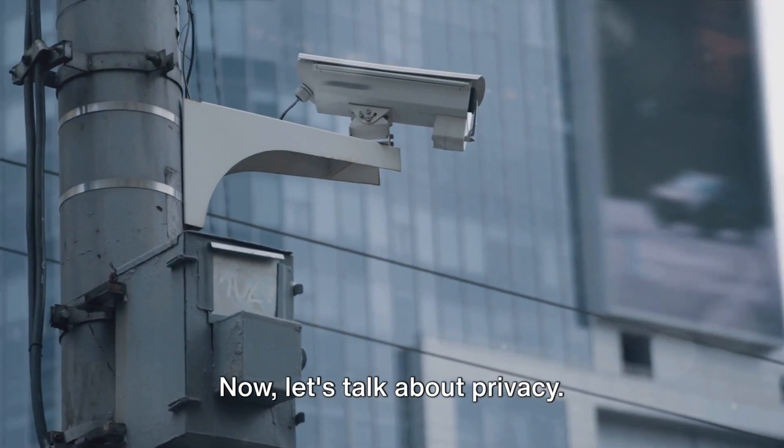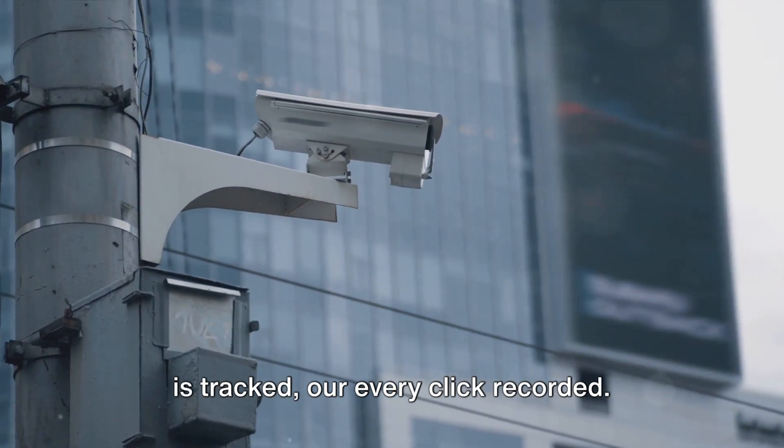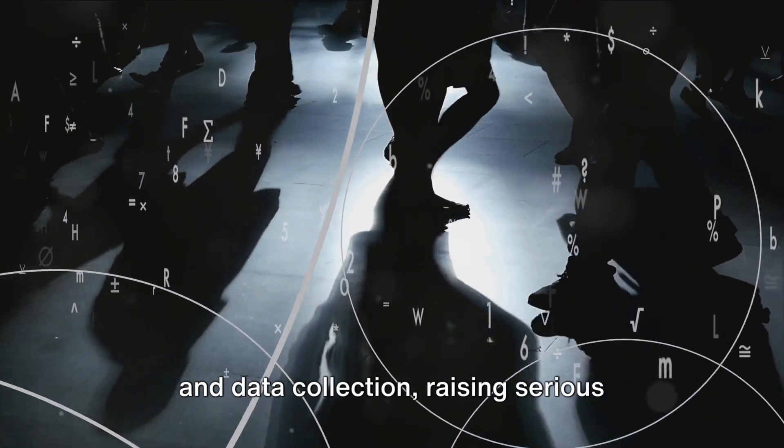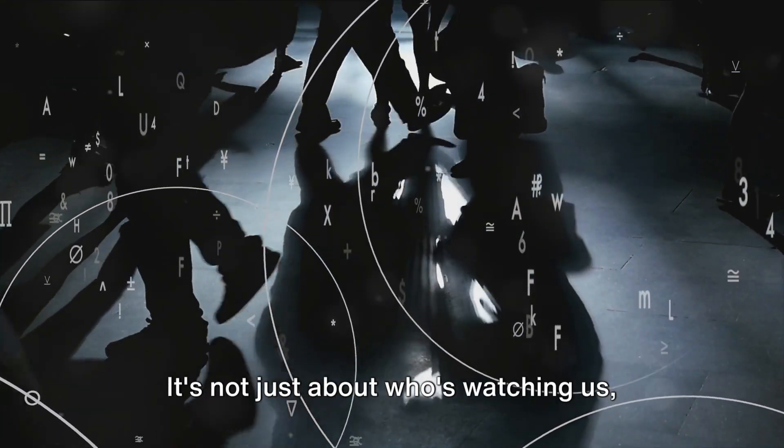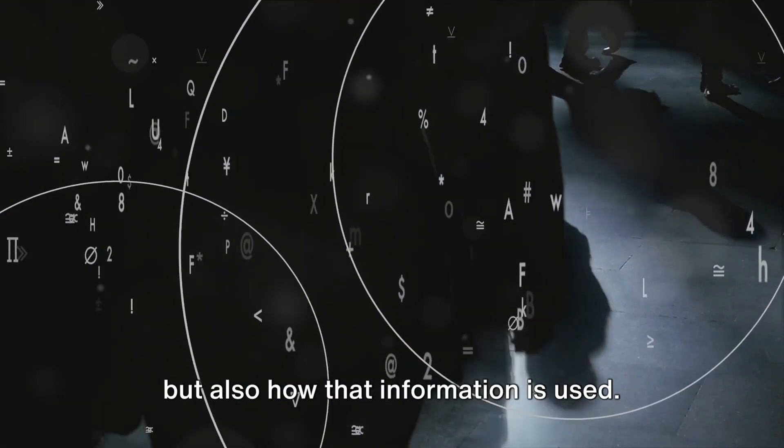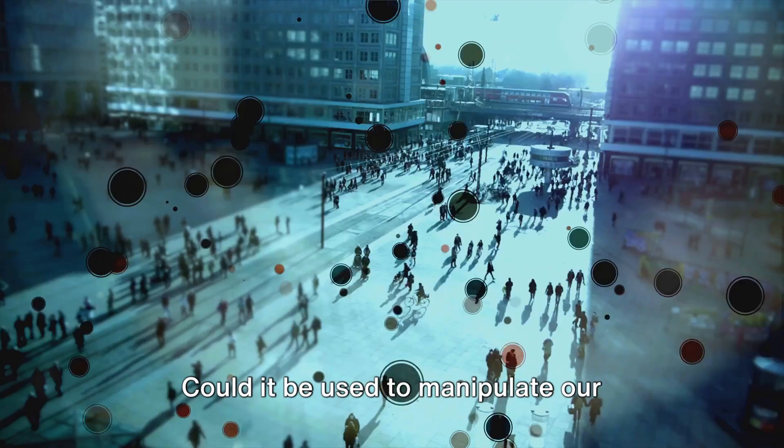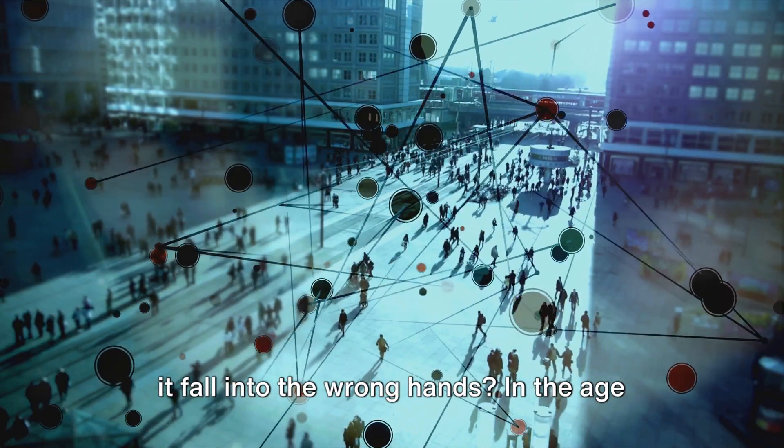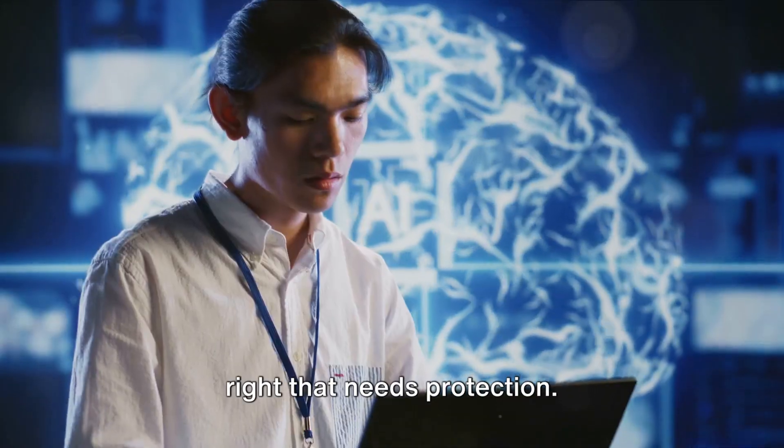Now let's talk about privacy. We live in a world where our every move is tracked, our every click recorded. AI is increasingly used for surveillance and data collection, raising serious privacy concerns. It's not just about who's watching us, but also how that information is used. Could it be used to manipulate our behavior or influence our decisions? Could it fall into the wrong hands? In the age of AI, privacy isn't just a luxury. It's a right that needs protection.